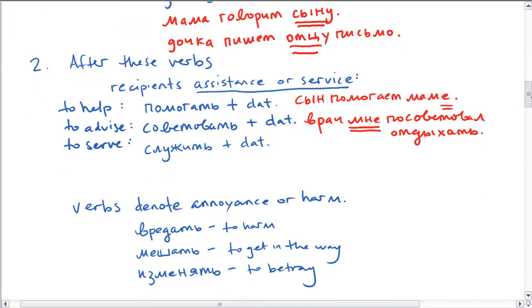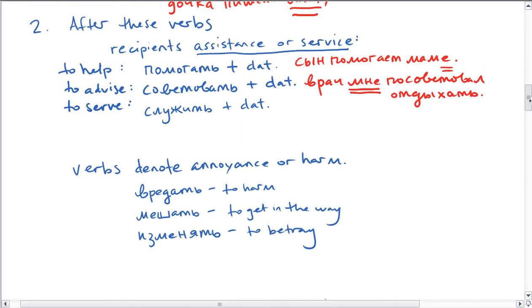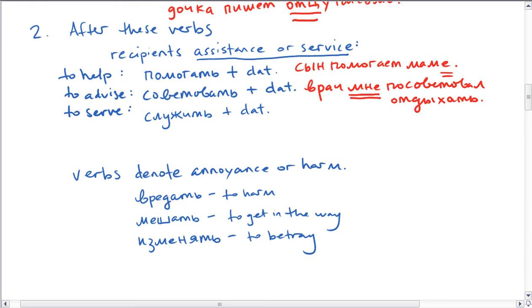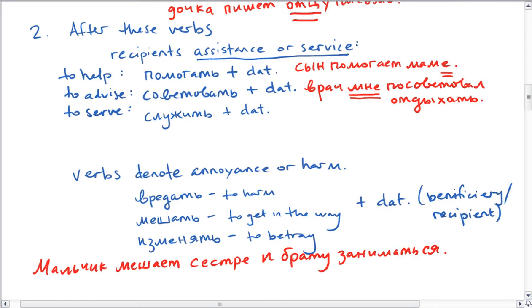So you can look at some examples. Сын помогает маме. So the son is helping the mother. She's the recipient of the help, and so she's in the datum case. Врач посоветовал мне отдыхать. So the doctor advised me to rest. So also after verbs that instead of providing service are kind of negative, right? So annoyance or harm or getting in the way. So these are all followed by the datum case. The beneficiary, if you can call them that, or the recipient of this annoyance or harm or betrayal is in the datum case.